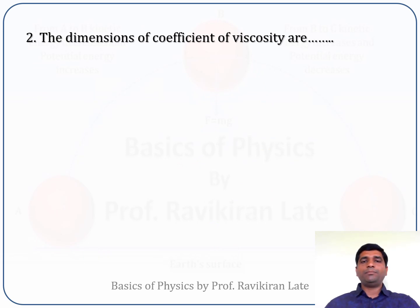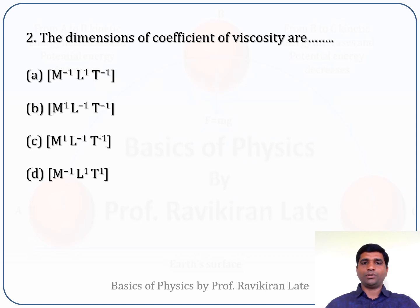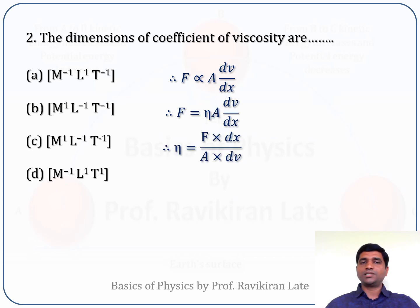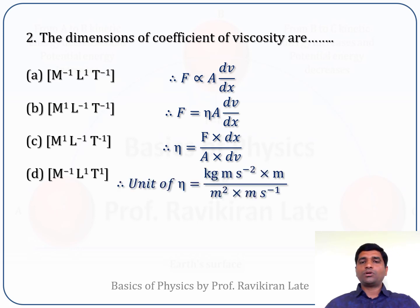We will now move to the second MCQ: the dimensions of the coefficient of viscosity. The four options are given below. As seen in the earlier MCQ, we derived the formula for η. Now instead of SI units, I will write the units in terms of fundamental units.